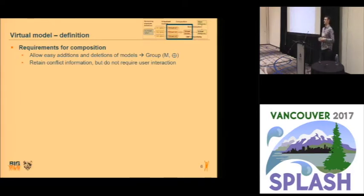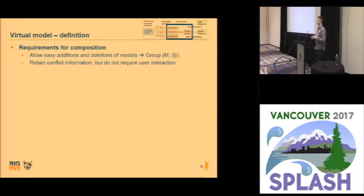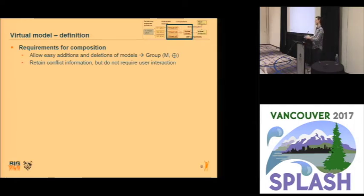For our virtual model, the main requirement is that you can easily compose them — meaning you can easily add and remove models from your composition. We wanted our models to build a group with model additions, so we can add and remove them. We also want to avoid that when the models are unified, conflicts occur and are displayed, because it would annoy the user if they needed to resolve conflicts before editing the document. Also, we don't want automatic conflict resolving which changes the base model, because we don't want that just because the user views the files, the base model gets suddenly changed.